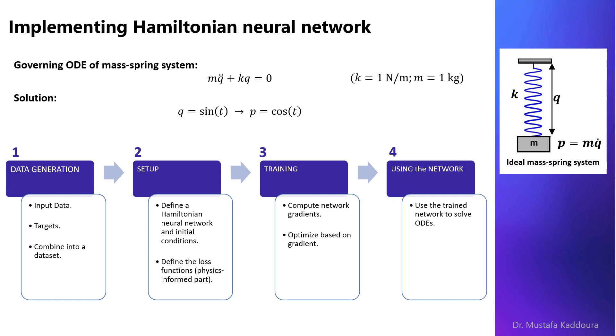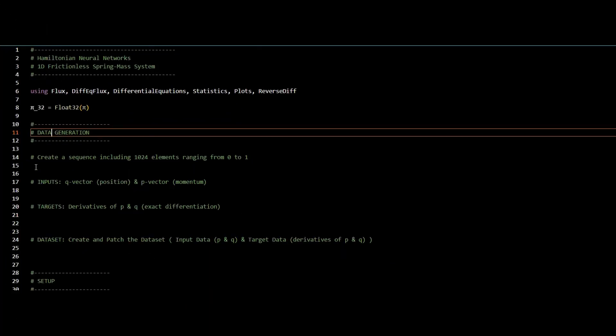Let's now see how we can code that in Julia programming language. The first step is data generation. I will start by creating a time sequence ranging from 0 to 1, including 1024 elements.